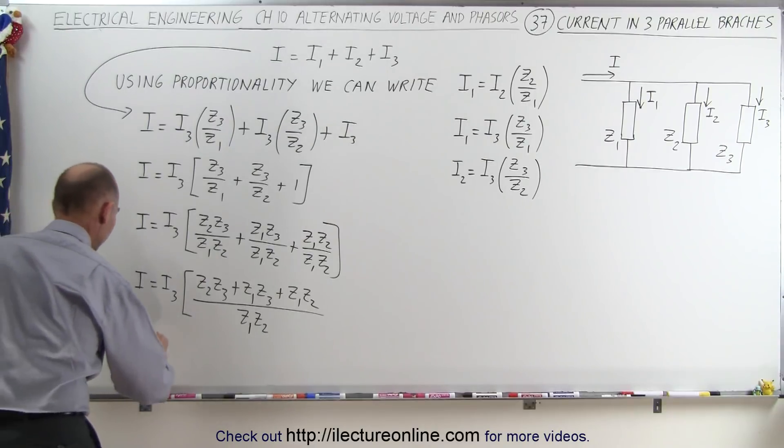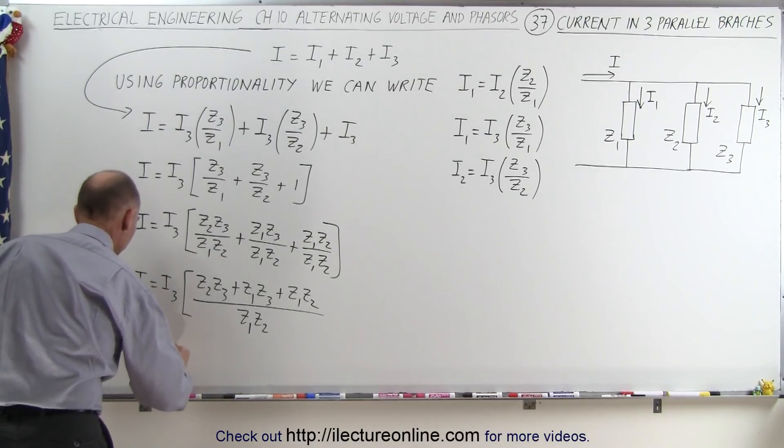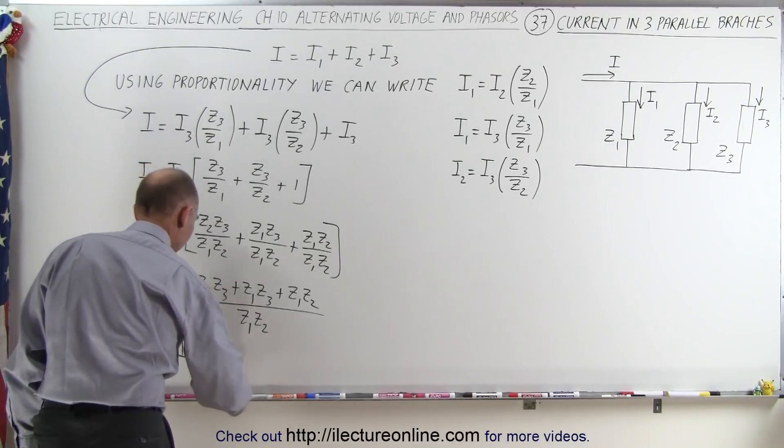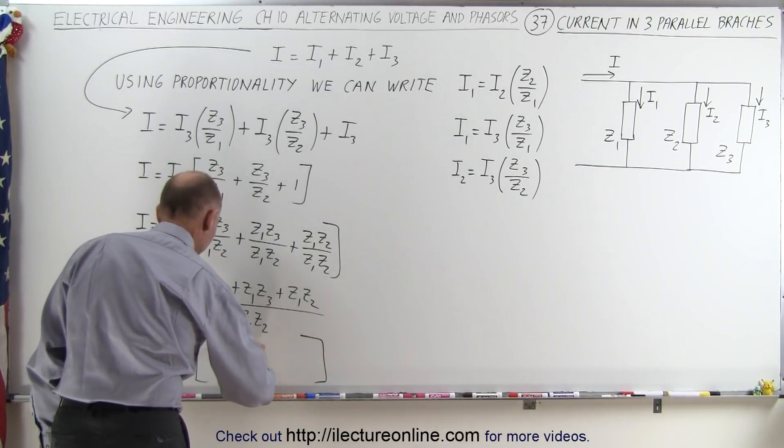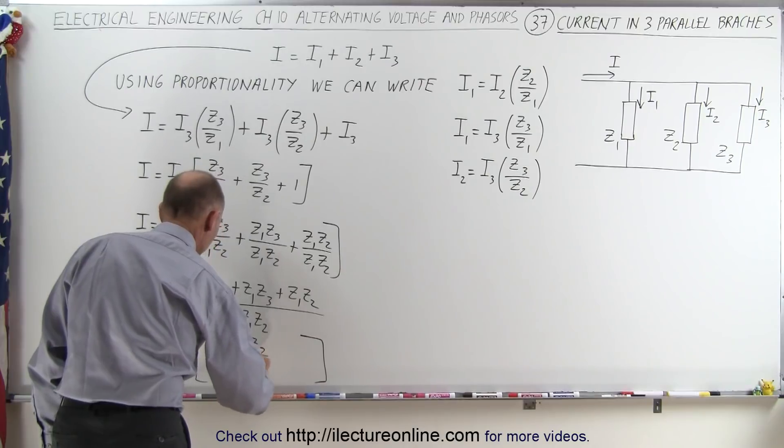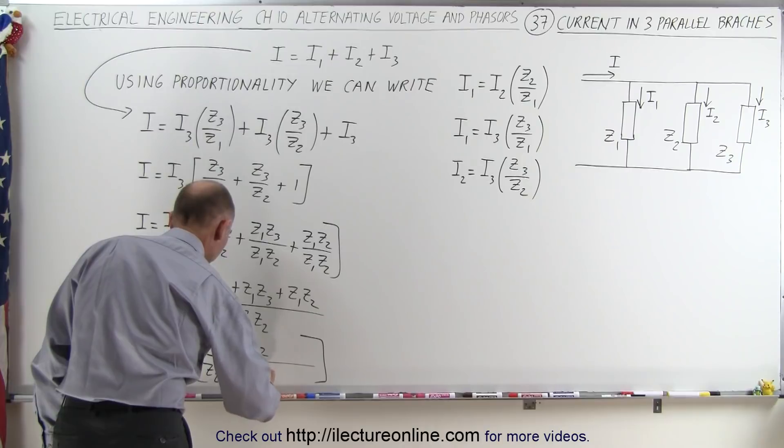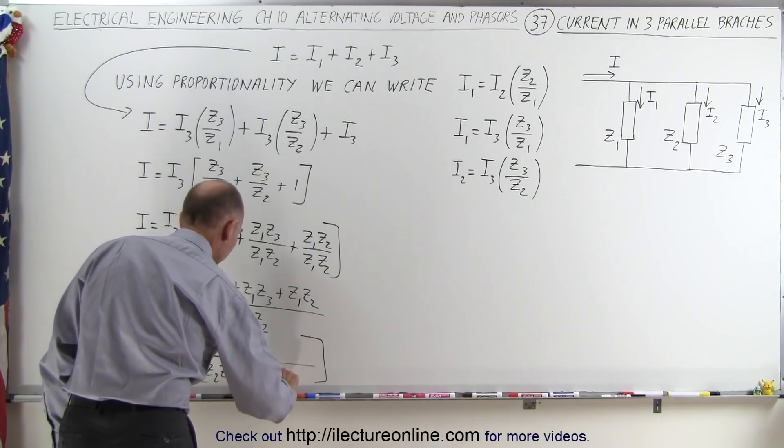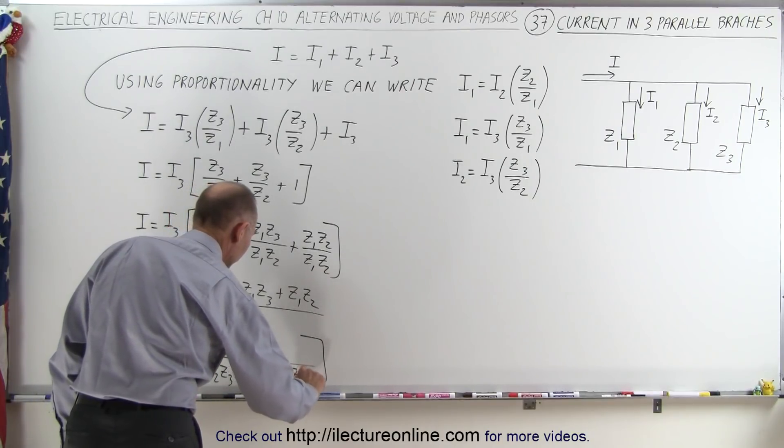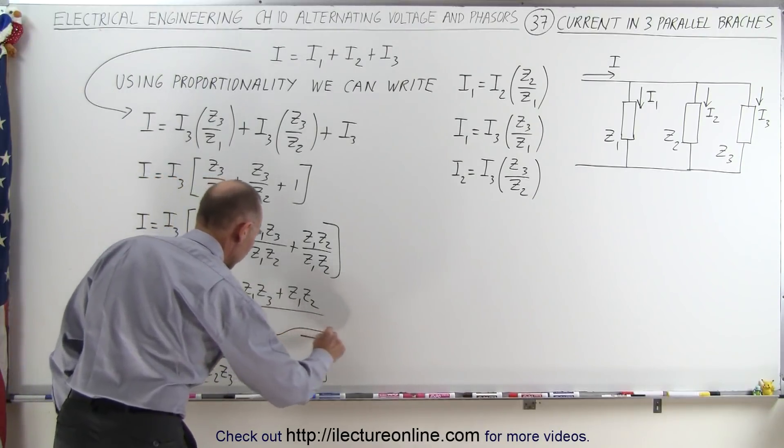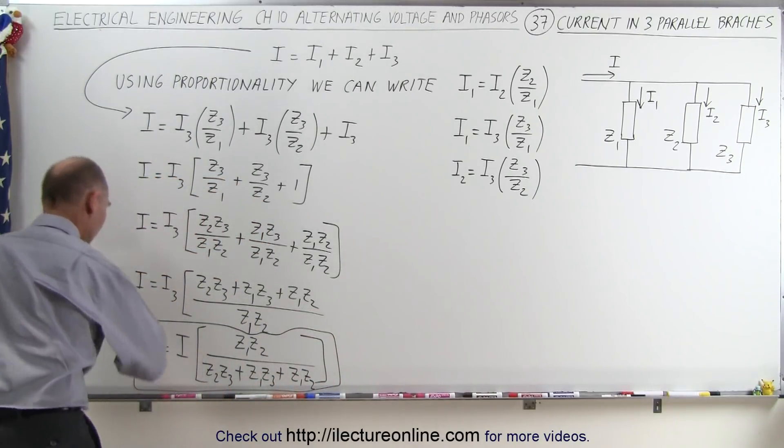And notice, since we're solving for I3, not for total current, we can write that I3 is equal to I times the inverse of all this, which can now be written as Z1 Z2 divided by Z2 Z3 plus Z1 Z3 plus Z1 Z2. And so that would be the equation we need for I3.